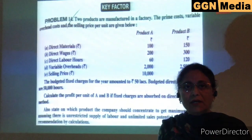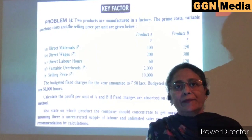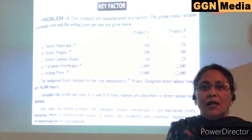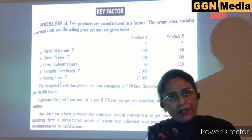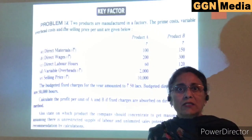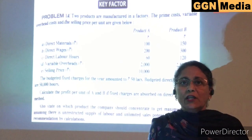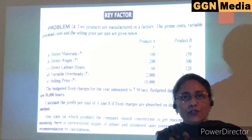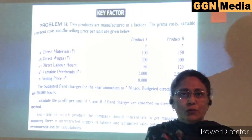This is how marginal costing or CVP analysis helps us to plan profits. The next application is key factor. Key factor is a factor of production which is critical and determines the rest of the business operations. It can be availability of material, labor hours, production in units, or sales in units. For example, during lockdown, sales is a critical factor that determines production operations and arrangement of all other inputs.